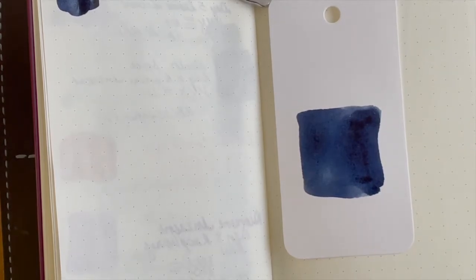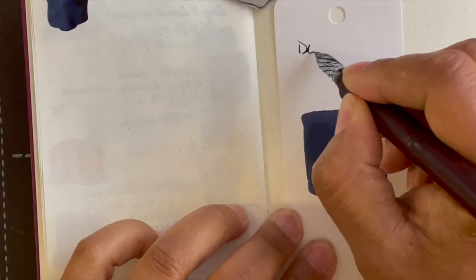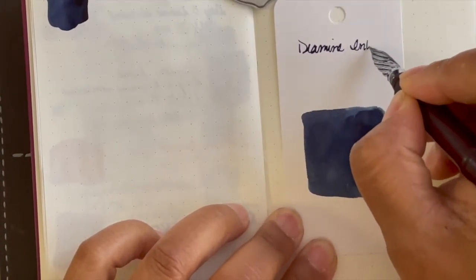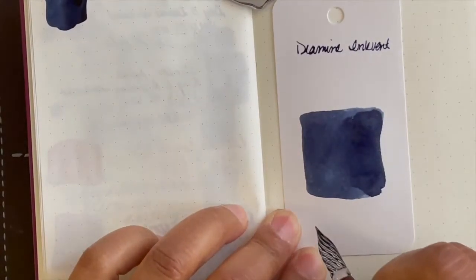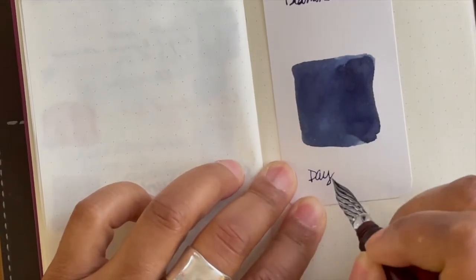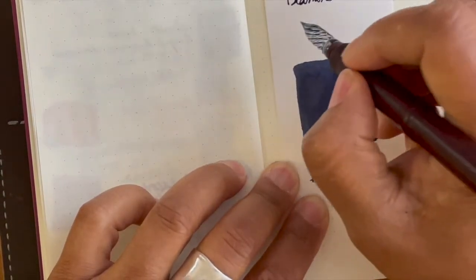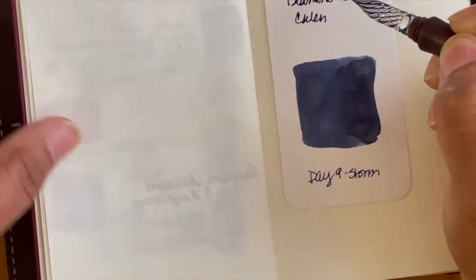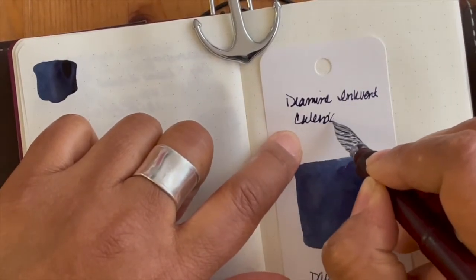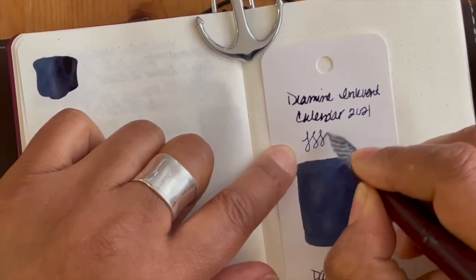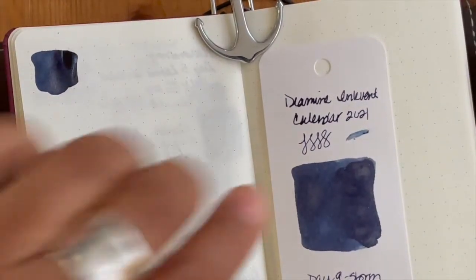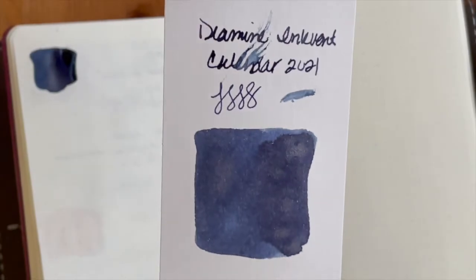And let's now just do a writing sample. Pull my scissors away from me. Diamine inkvent, this is day nine, Storm, calendar. Let me just do this out of frame. Calendar 2021. Oh, not so bad. Not really seeing any shimmer to this yet. Maybe once it dries I can pull that out and see it.